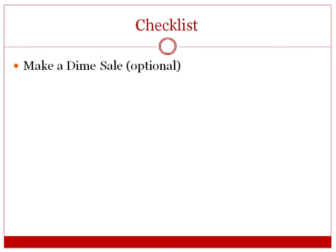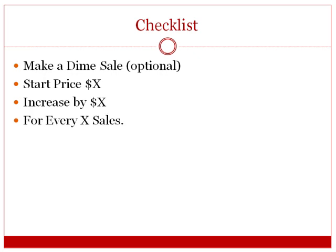If you want to do a dime sale — which means you start at a lower price and every time somebody buys it increases by a certain amount until it hits a maximum price — you'll need to know the starting price and how much it increases per sale. For example, if the start price is $1 and the end price is $50, you could set it to increase $0.10 or $0.05 for every one or every three sales.